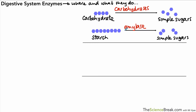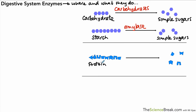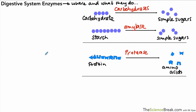One specific example is the enzyme amylase, which breaks down the carbohydrate starch into simple sugars. Our next food type is proteins — long chains that are broken down into individual units called amino acids. Proteins are broken down into amino acids by enzymes called proteases.